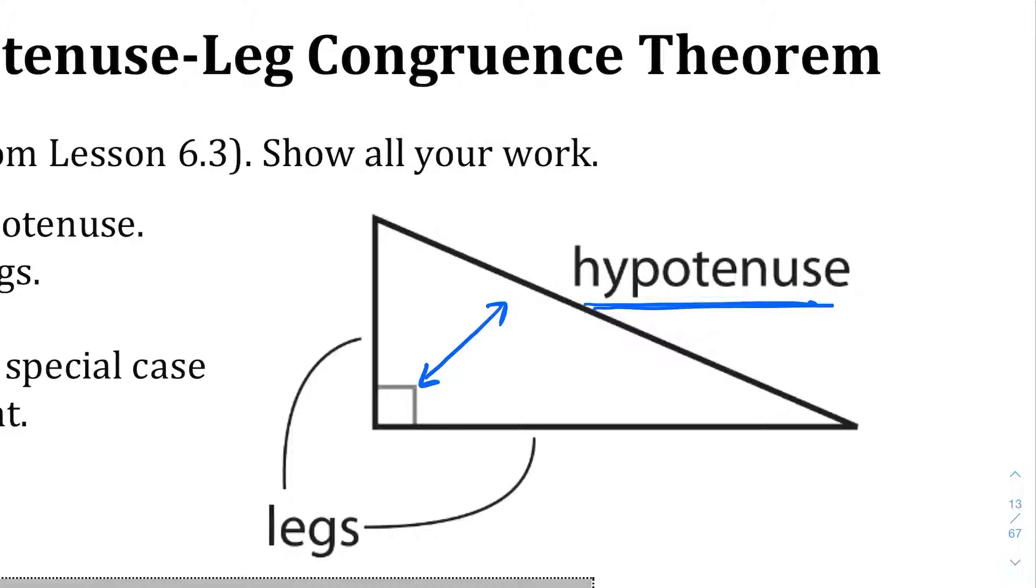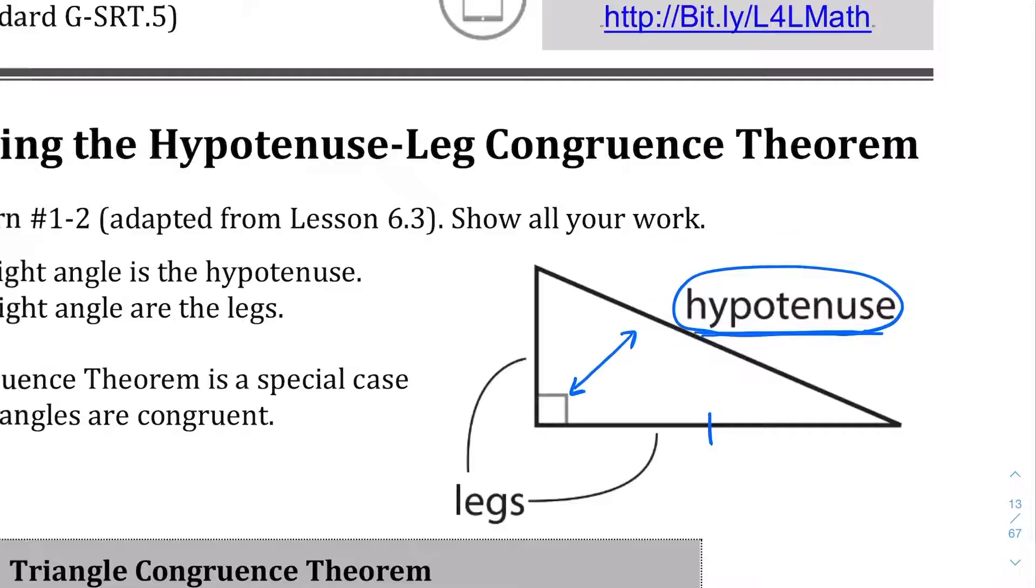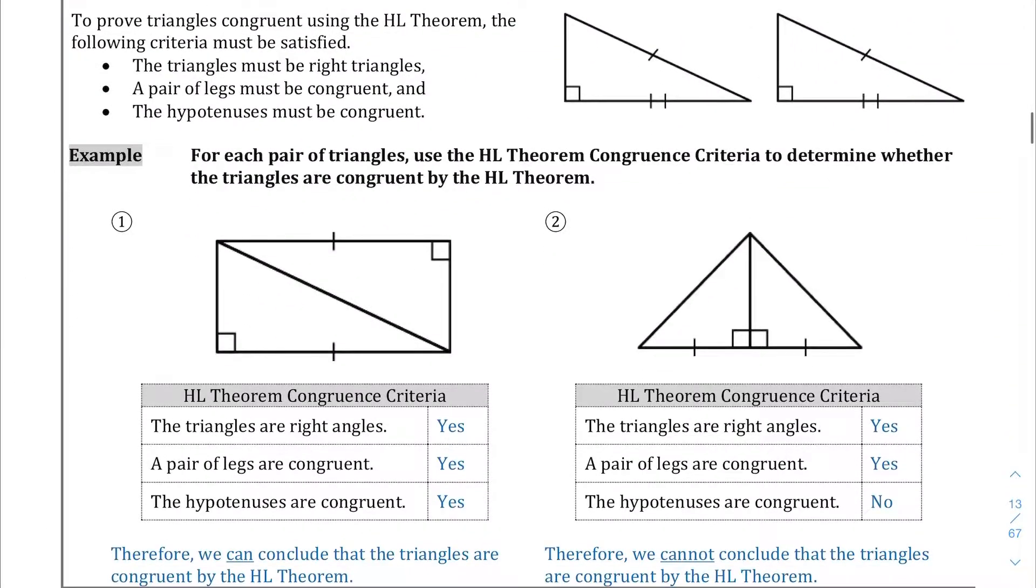Now, when we have two right triangles, what the hypotenuse-leg triangle congruence theorem says is that if you have a hypotenuse and a leg that is similar on both triangles, then those two triangles are congruent. So this is kind of a strange one that's a little bit different from all the previous ones, but as long as you have two right triangles and you have a hypotenuse and a leg, an adjacent leg that is congruent, then you can prove that those two triangles are congruent.